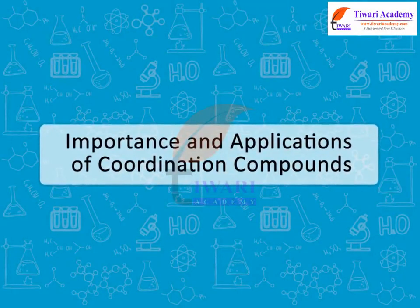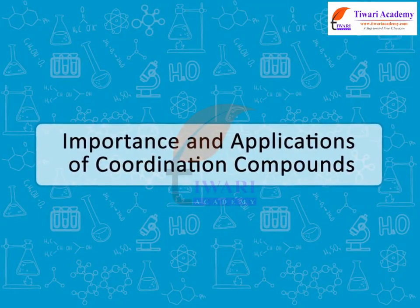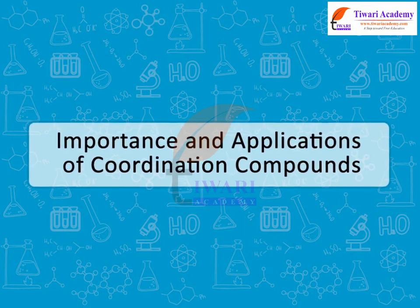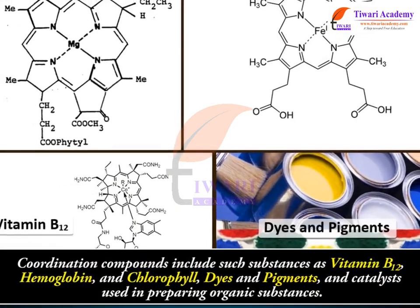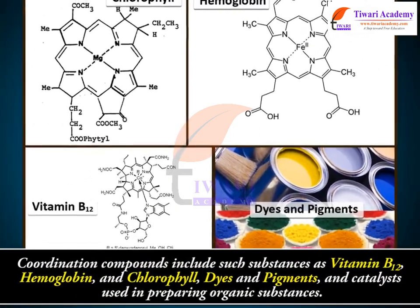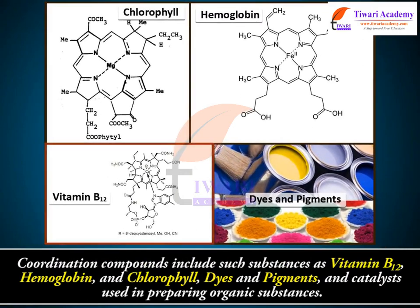Importance and Applications of Coordination Compounds. Coordination compounds include such substances as vitamin B12, hemoglobin, and chlorophyll, dyes and pigments, and catalysts used in preparing organic substances.